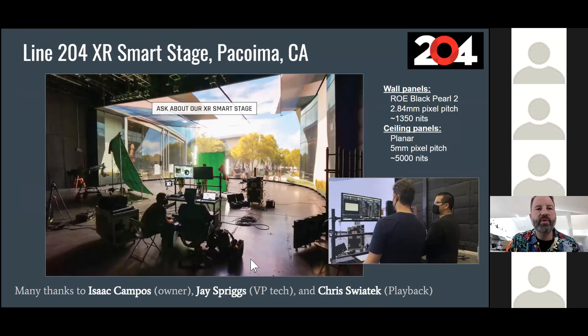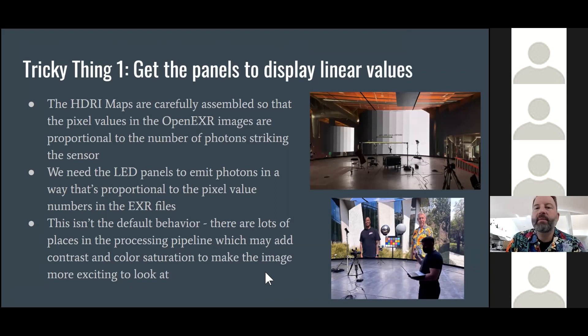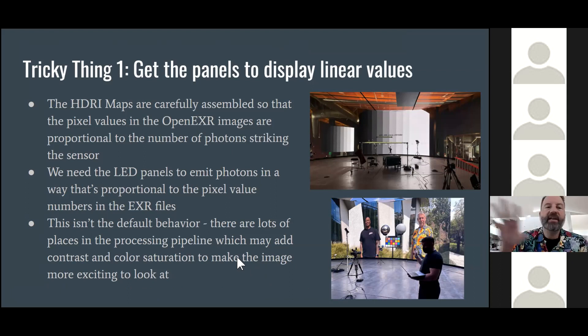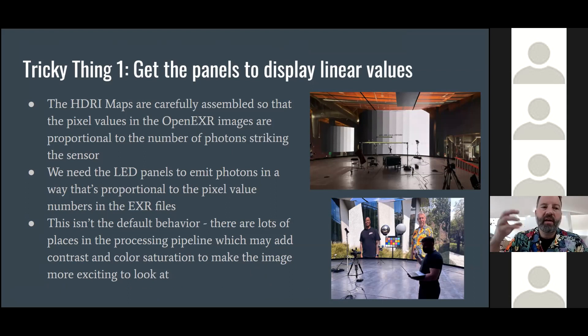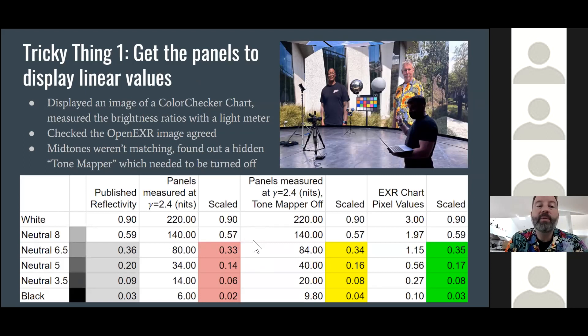With that recorded, it was time to go to a virtual production stage. We were lucky to use the Line 204 Smart Stage in Pacoima. We wanted to put these HDRI maps on the stage, have actors lit by them, and see if they looked the same as in the real world. We spent our first two days — all the time we'd planned to shoot — making sure they were producing linear values output, so that EXR files with pixel values proportional to amount of light. When turned back into light, the panels need to display illumination proportional to those pixel values. That took chasing down some rogue tone mapping functions in the pipeline before we got to acceptable linearity.